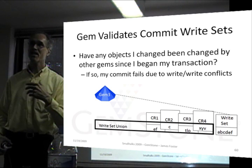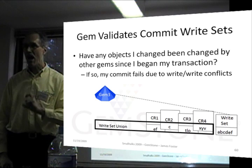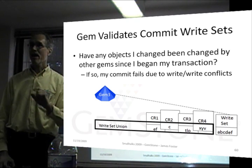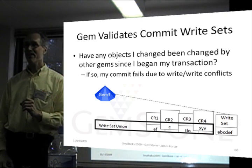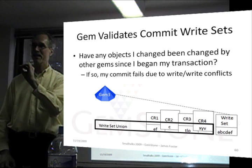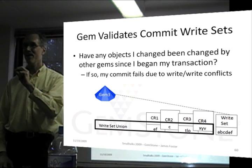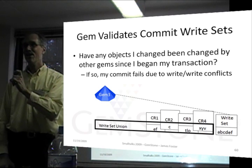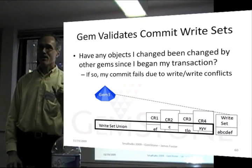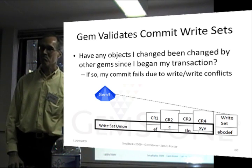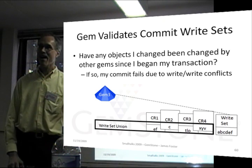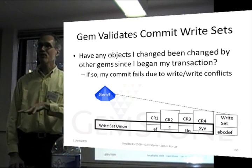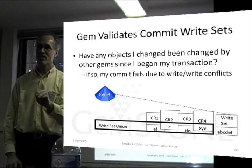It's up to you as an application developer to choose the logical granularity at which the lock should be acquired. You might have a customer and split it into demographics and orders — just because someone in the accounting office is updating the customer's credit limit shouldn't prevent someone in order fulfillment from marking an order as filled. It's up to you to design your application so that it's logically consistent from your point of view.